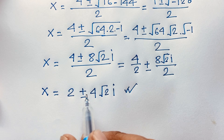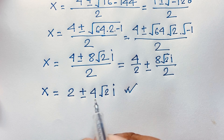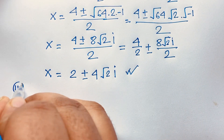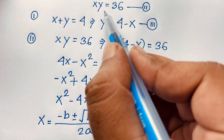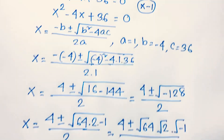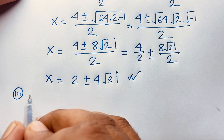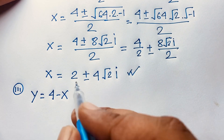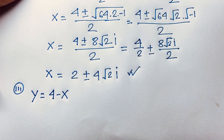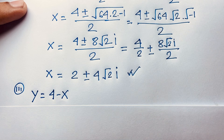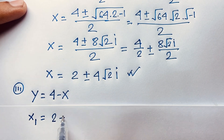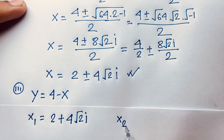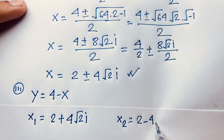Here is a complex solution — there is no real solution; both are complex numbers. Now we will find out what y is equal to. Recall our third equation: y is equal to 4 minus x. So x1 equals 2 plus 4 square root 2 i (taking the positive value), and x2 equals 2 minus 4 square root 2 i.